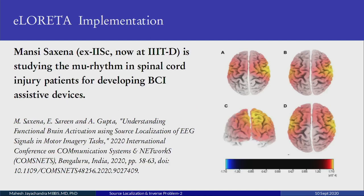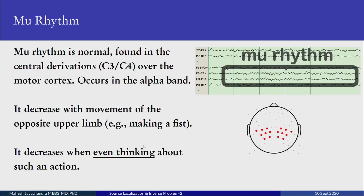For implementation: one student at IISc, now at IIT Delhi, studied the mu rhythm in spinal cord injury patients for developing BCI assistive devices. The mu rhythm is in the alpha band, located over the motor and sensory-motor areas centrally on both sides. When you move — or think of moving — it gets disrupted. It could be mistaken for alpha waves, but alpha waves are typically most prominent in the occiput, whereas the mu rhythm is localized only to the central and parietal areas.